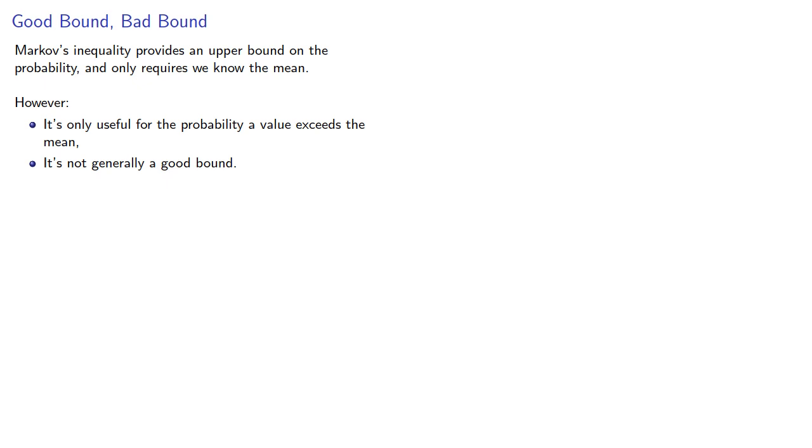And if you think about it, the problem is that the distribution about the mean is also important. And remember that distribution is measured by the standard deviation. And so the question is, what if we incorporated the standard deviation? Could we use the standard deviation to get a better bound on the probabilities? And we'll take a look at that next.